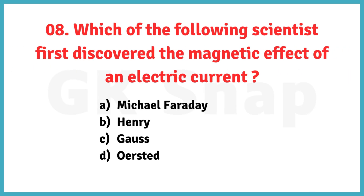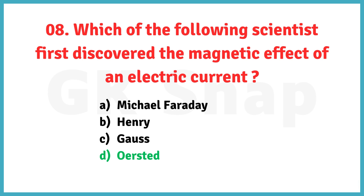Which of the following scientists first discovered the magnetic effect of an electric current? Correct answer is option D.